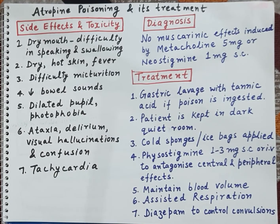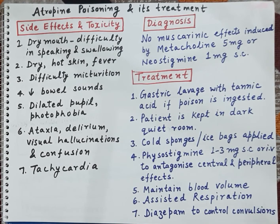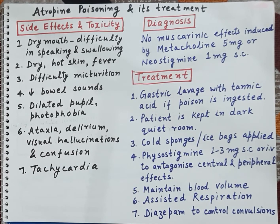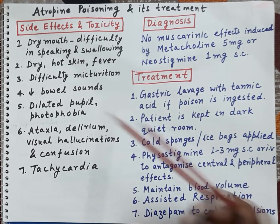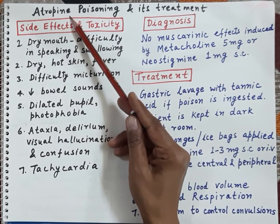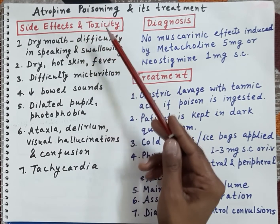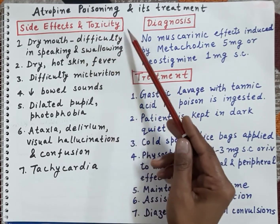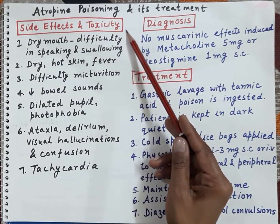In today's session we are going to discuss toxicity symptoms of atropine poisoning and its treatment. Atropine antagonizes muscarinic effects of acetylcholine, and the side effects and toxicity symptoms of atropine are as follows.